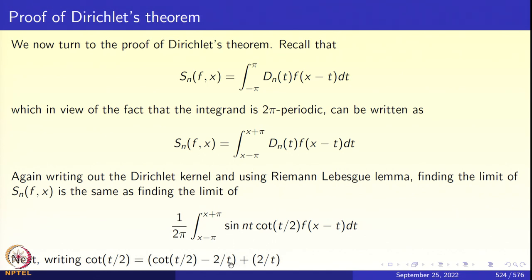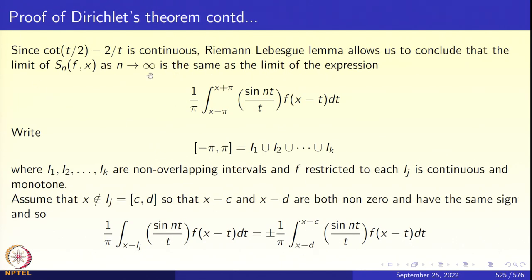Add and subtract 2/t, since cot(t/2) behaves like 2/t. So cot(t/2) equals (cot(t/2) minus 2/t) plus 2/t. The term cot(t/2) minus 2/t is continuous when we assign its value at 0 appropriately, so again by the Riemann–Lebesgue Lemma that term goes to 0. We just have to deal with sin(nt)/t. So as n tends to infinity, the limit of S_n(f, x) equals the limit of (1/π) times the integral from x minus π to x plus π of sin(nt)/t times f(x minus t) dt.